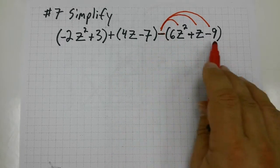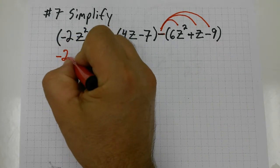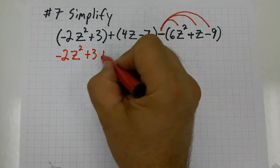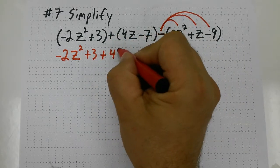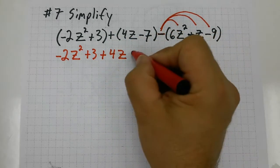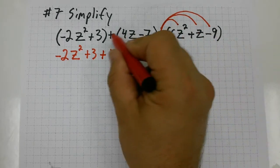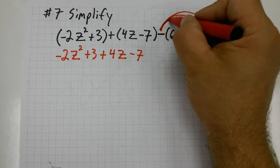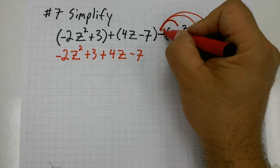That's going to give me negative 2z squared plus 3, no parentheses needed, plus sign 4z minus 7. Again, don't need those parentheses. Now I can eliminate these parentheses by distributing that negative or negative 1.